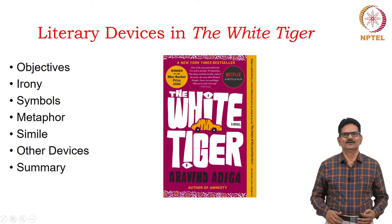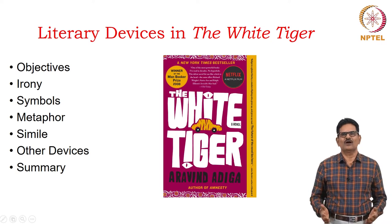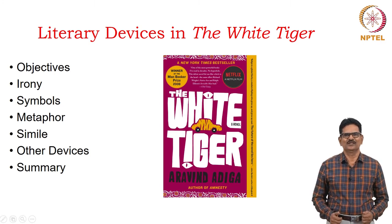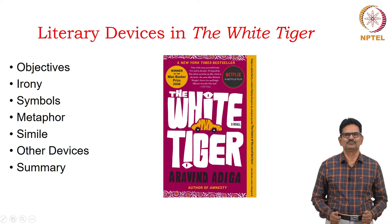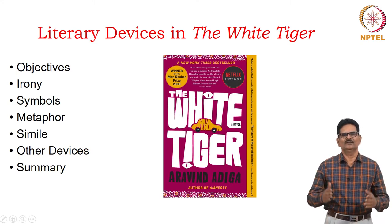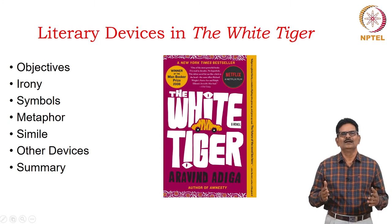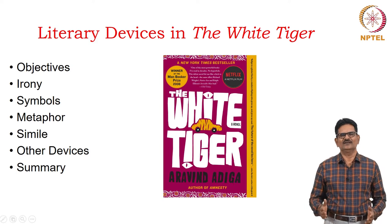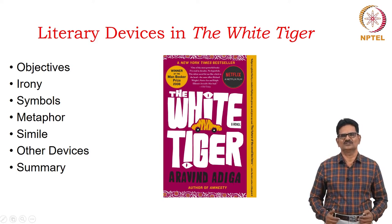Hello friends! We are with the fourth lecture on The White Tiger by Aravind Adiga in the ninth week of our course. The topic is Literary Devices in The White Tiger. We will see the objectives and some literary devices like irony, symbols, metaphor and simile. Thereafter, we will look at an assortment of devices in the novel and then summarize our lecture.